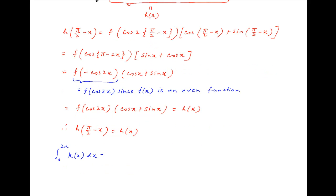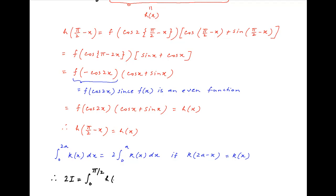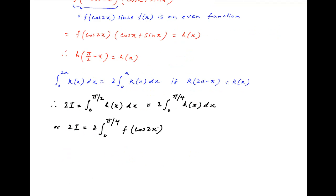Now we recall a property of definite integrals that integral 0 to 2a of k(x)dx is equal to 2 times integral 0 to a of k(x)dx if k(2a minus x) equals k(x). We have established that h(pi upon 2 minus x) equals h(x). Therefore 2I, which equals integral 0 to pi upon 2 of h(x)dx, can also be written as 2 times integral 0 to pi upon 4 of h(x)dx.